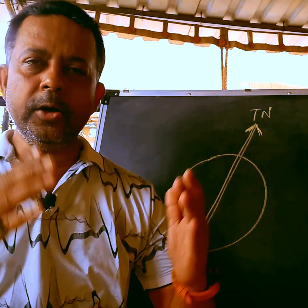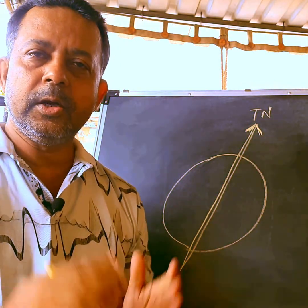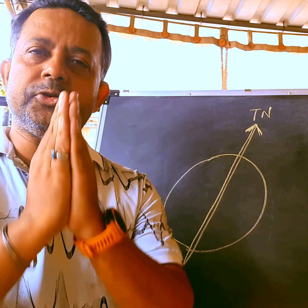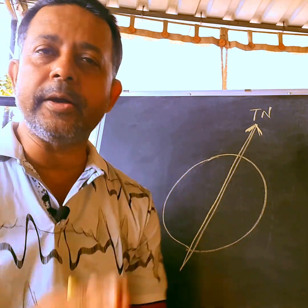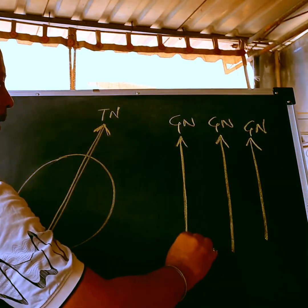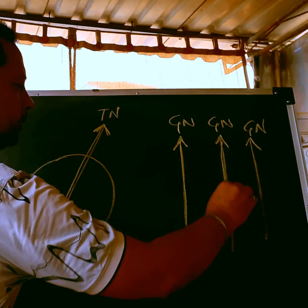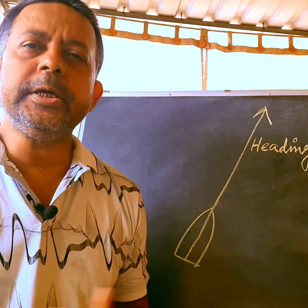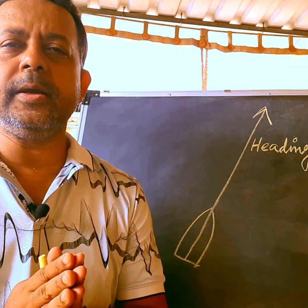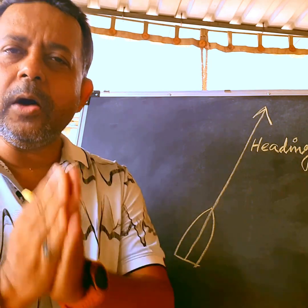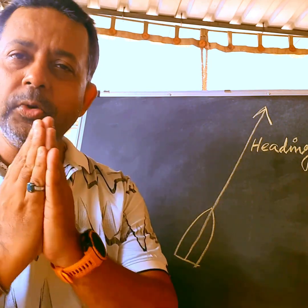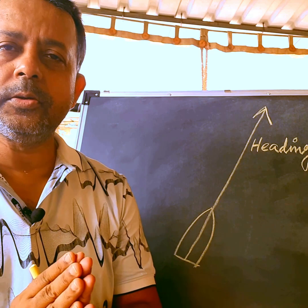In all Mercator projections, a straight line pointing straight up shows the grid north. So the question is: how can we define our heading — how do we measure the angle with reference to the true north?